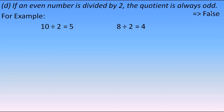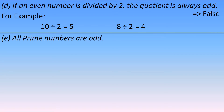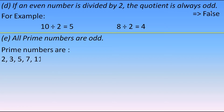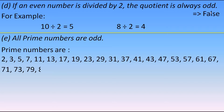Next statement: all prime numbers are odd. Writing out all the prime numbers, we can see that all are odd except the number 2, which is even. So we can't say all prime numbers are odd. This statement is false.